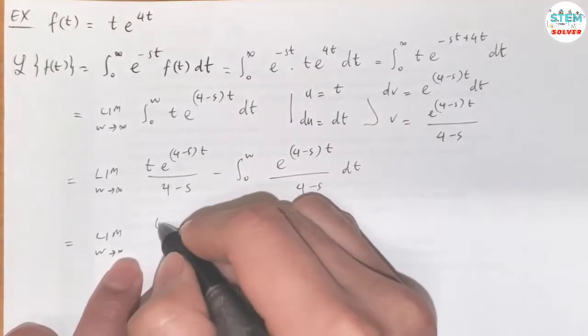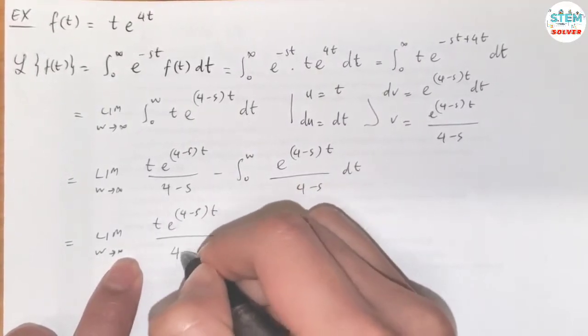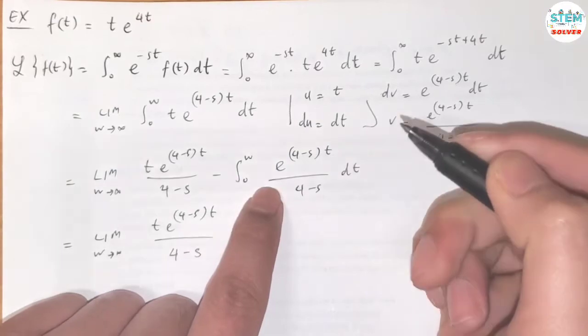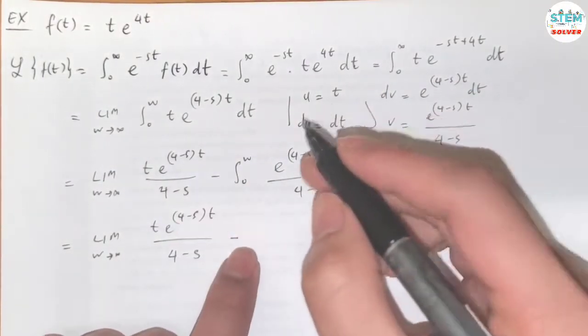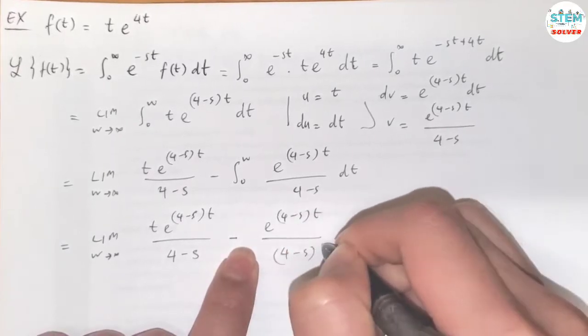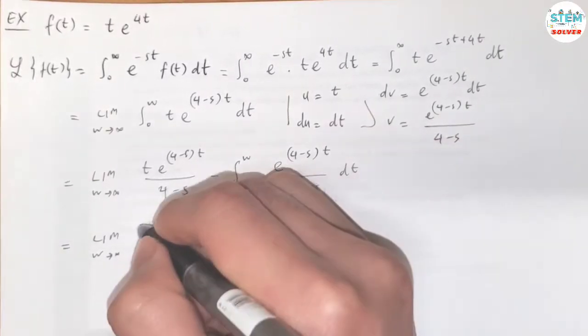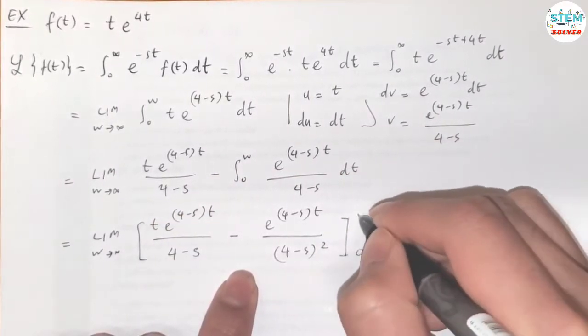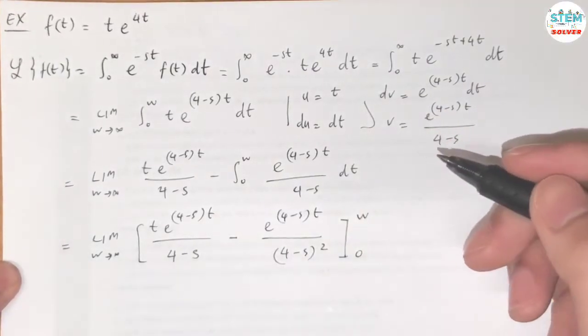For this one, just rewrite it. And for this one, the integral is equal to e to the 4 minus s times t over 4 minus s squared. And we evaluate from 0 to w, okay?